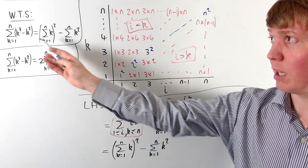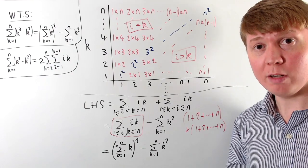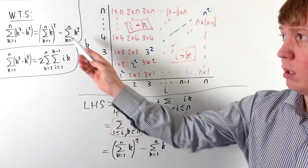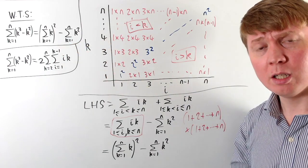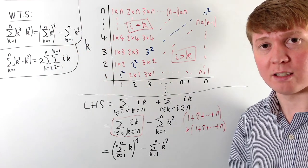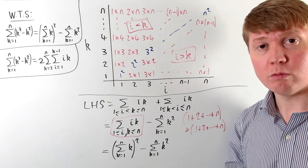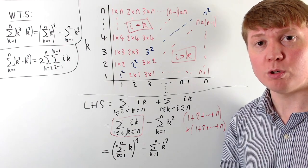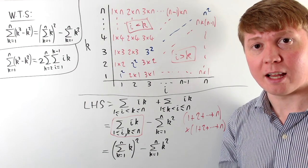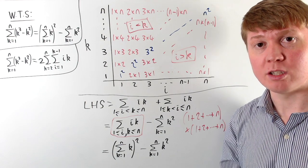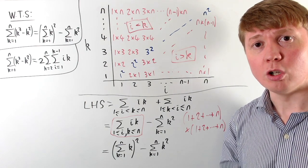We started with the left hand side — the sum of k cubed minus k squared — and showed it is equivalent to the sum of the first n integers all squared, minus the sum of the first n squared numbers. Since this is equivalent to the original statement we set out to prove, we can say with certainty that the sum of the first n cubed numbers is indeed equal to the sum of the first n integers all squared.